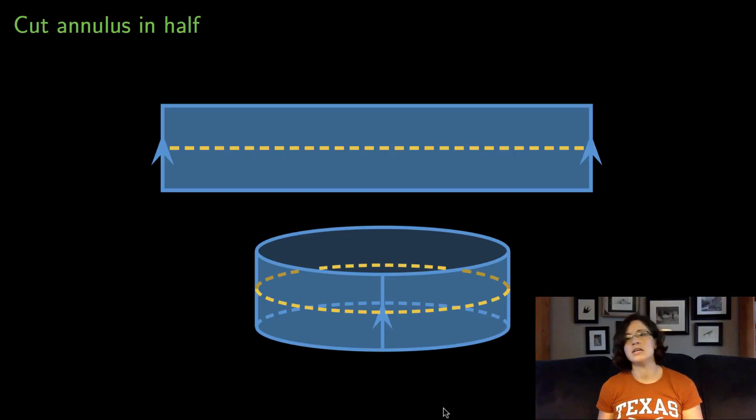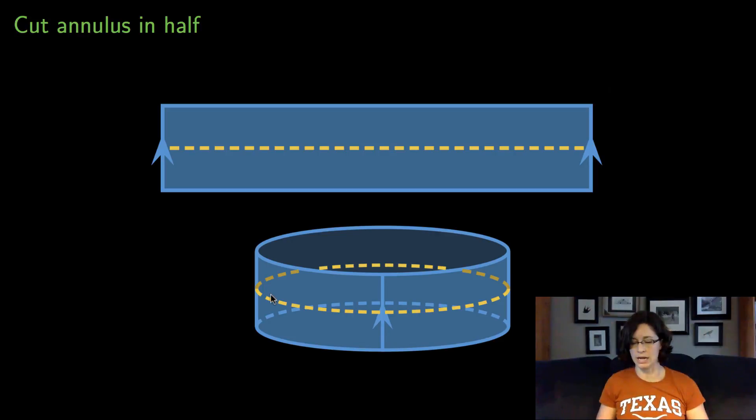Now here is the paper version of the experiments that we did in the previous videos. If you take an annulus and you cut it in half down the middle, what happens in the identification diagram is you have one line going down the middle. You know that the midpoint over here is actually taped to the midpoint over there. And in this 3D depiction here, what happens is you know that you're going to cut that annulus in half.